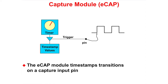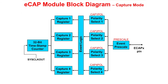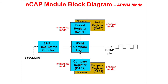The capture module allows time-based logging on external signal transitions on the capture input pins. The capture module features a 32-bit timestamp counter to minimize rollover. Each module has four capture registers. Polarity can be set to trigger on rising or falling edge and trigger events can be pre-scaled. The capture module can operate in absolute timestamp mode or difference mode where the counter resets on each capture.